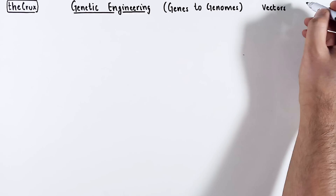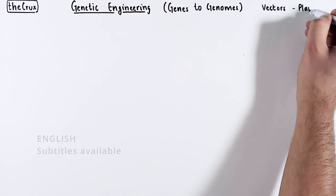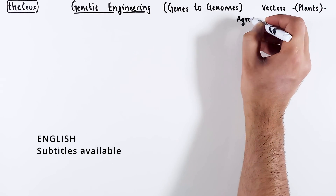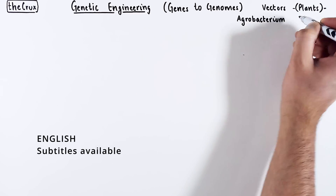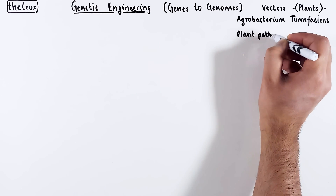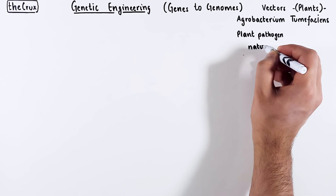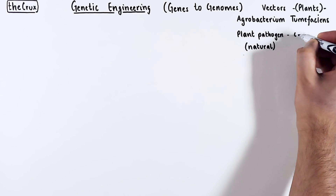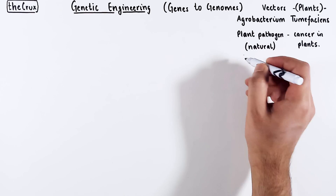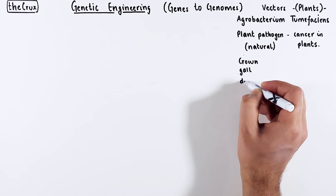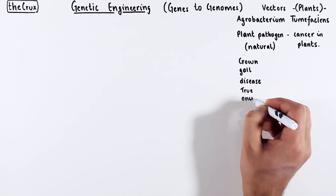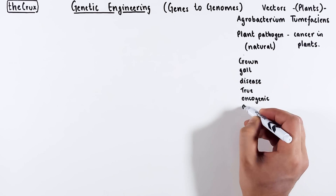This is a video on plant cloning vectors, one that primarily focuses on agrobacterium-based vectors. This is a natural pathogen that infects plants and causes cancer in plants. The name of the cancerous disease is crown gall disease, and it is a true oncogenic disease.